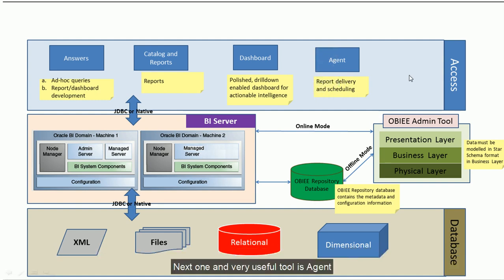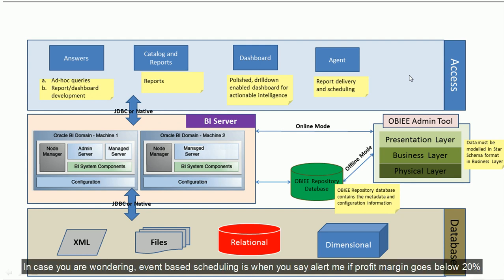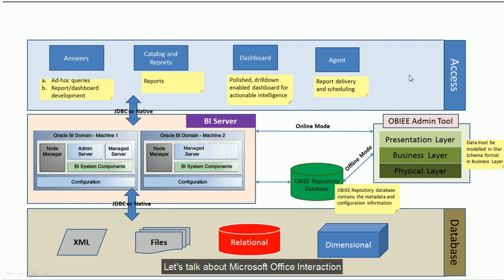The next very useful tool is Agent. Agent is used for OBIEE object scheduling. You can do event-based scheduling using agents. Event-based scheduling means you can set an alert, for example: alert me if my profit margin goes below 20%.